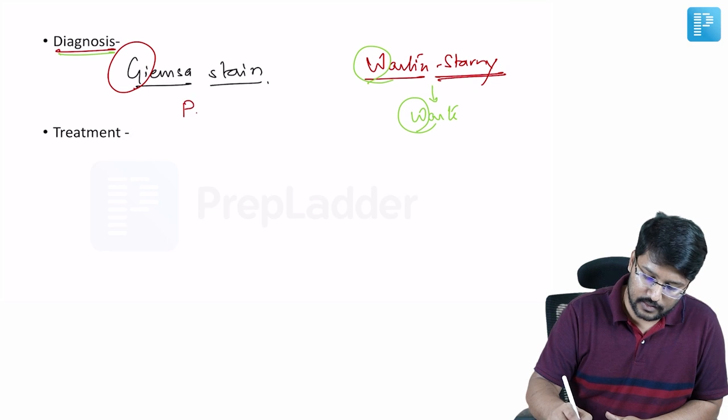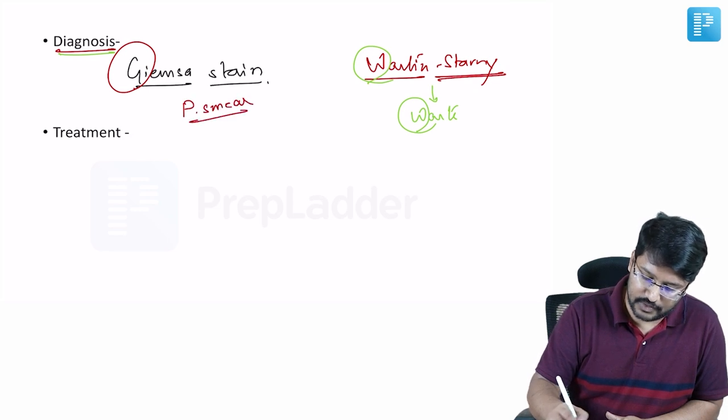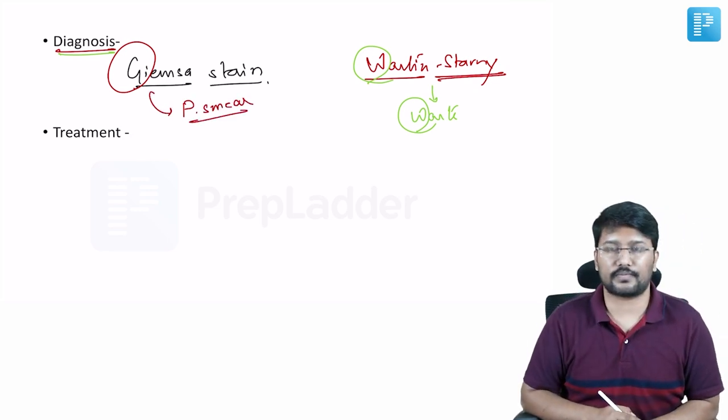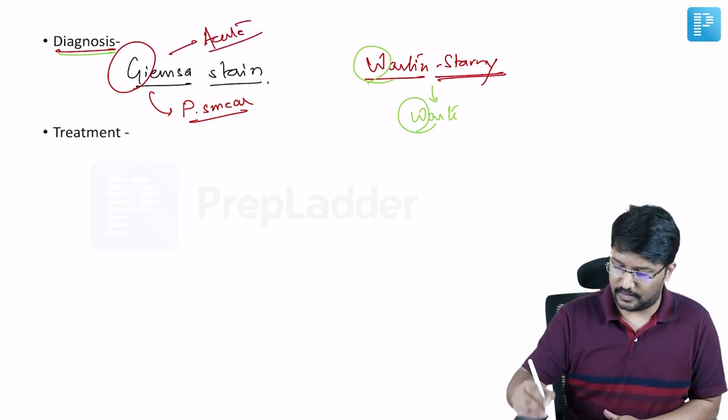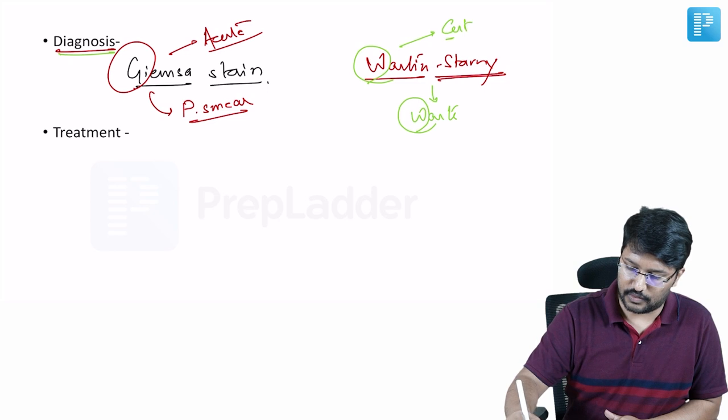Giemsa for peripheral smear. Giemsa for peripheral smear. So this is for acute phase and this is when there is a cutaneous or chronic phase.